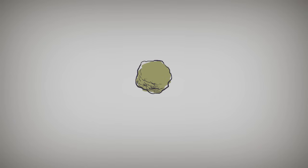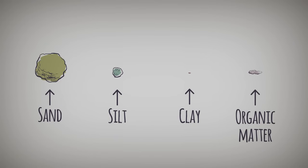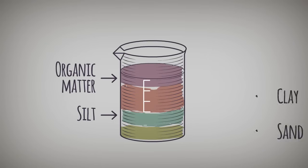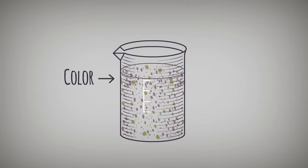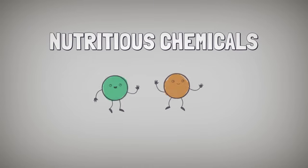It's like this. Soils are composed of sand, silt, clay, and organic matter. Some have more sand, others more clay. Each soil's unique blend determines its color, texture, and storage capacity for nutritious chemicals.